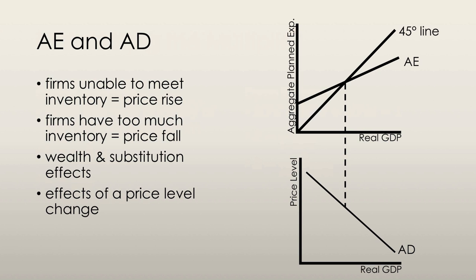Now let's look at how aggregate demand and aggregate expenditure interact. When firms are unable to meet inventory targets and they increase production, they also increase price. When they need to reduce inventory and reduce production, they reduce price to get rid of that inventory. The wealth effect states that the smaller the purchasing power of wealth, the less people spend and they save more. So the higher the price level, the lower is aggregate expenditure.